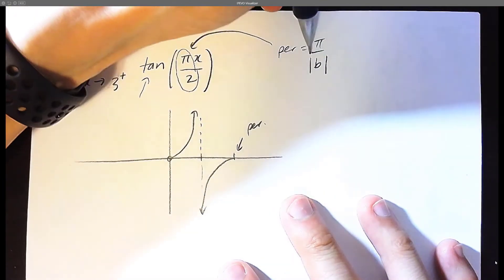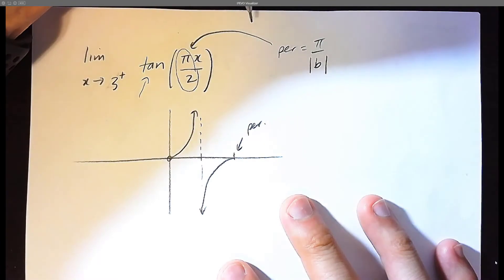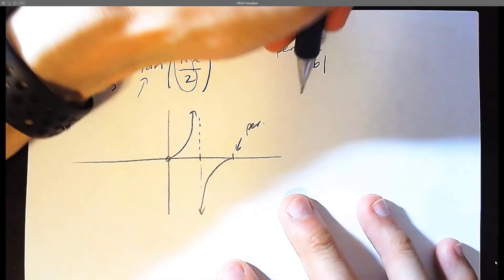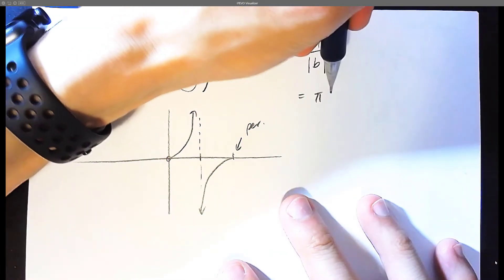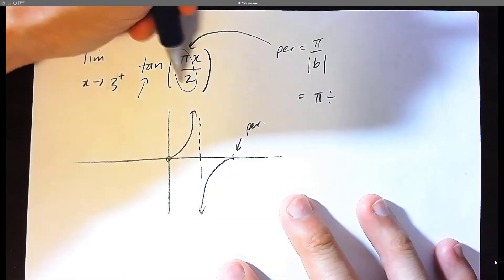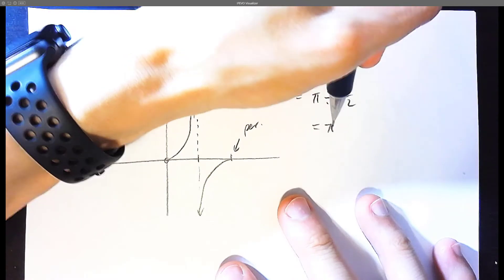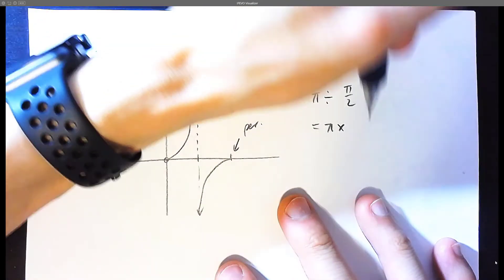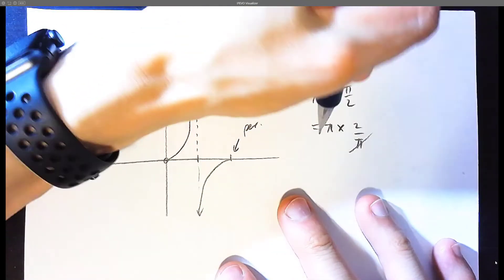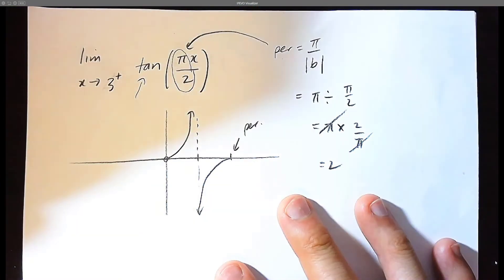The period has to be a positive value, so you could stick absolute value signs if you want. So the period for tan is pi divided by the b value, which happens to be pi over 2. So the division becomes a times, if you flip it, it becomes 2 over pi, and the pi's cancel. So you can see that the period is 2.